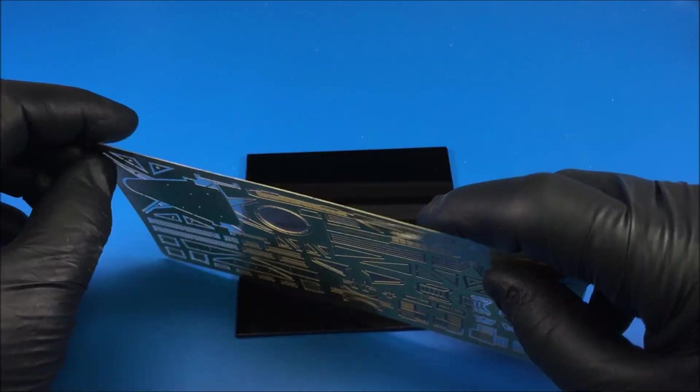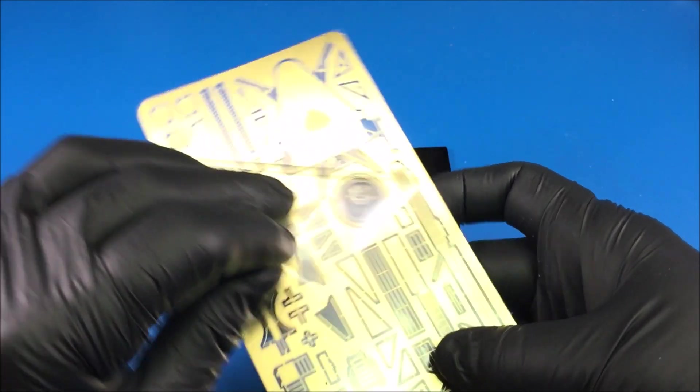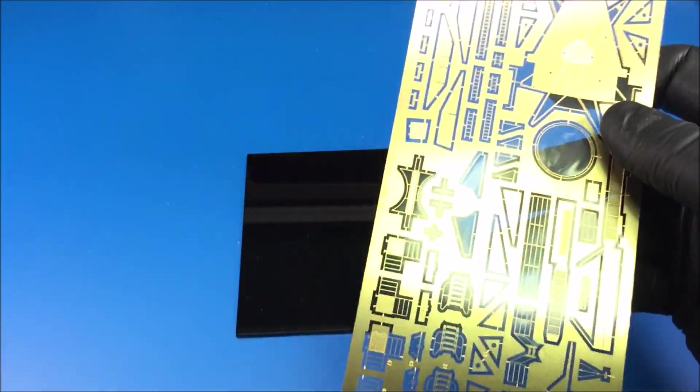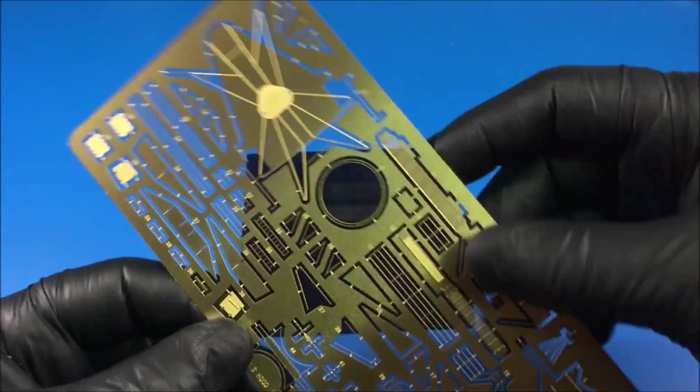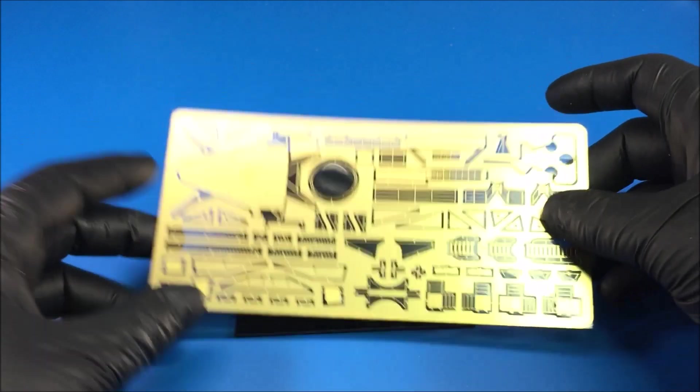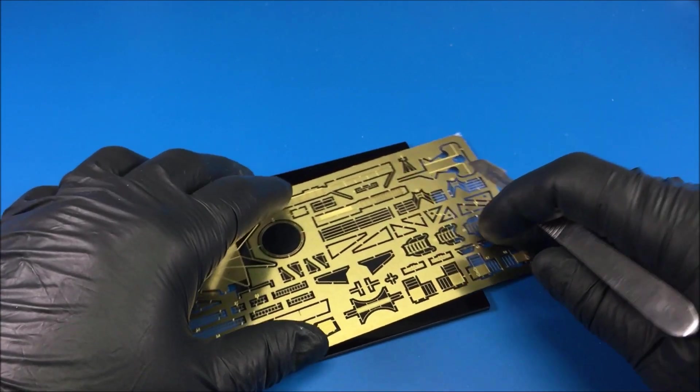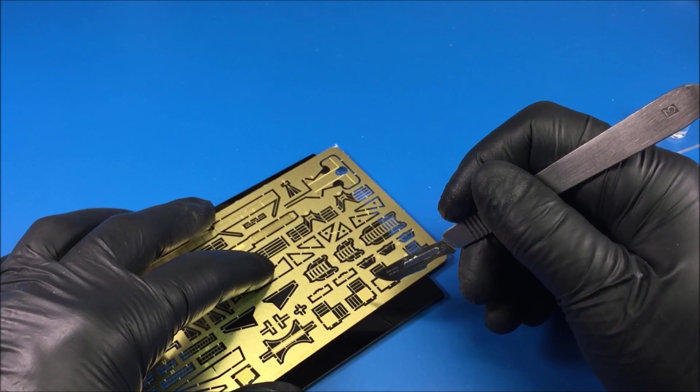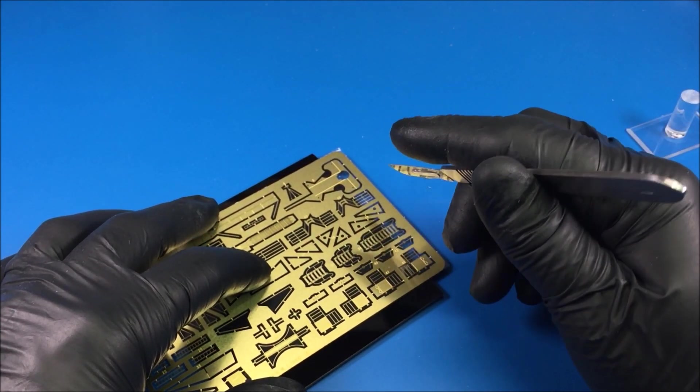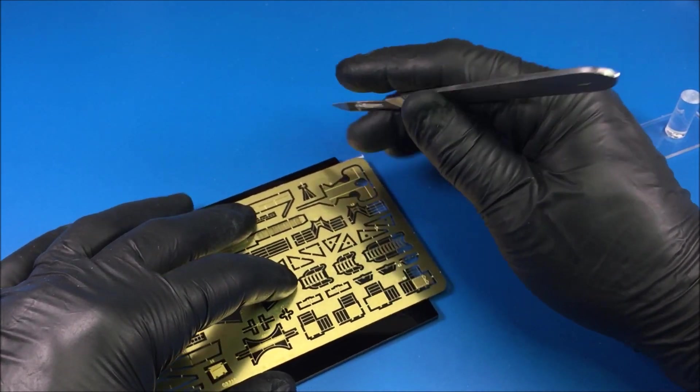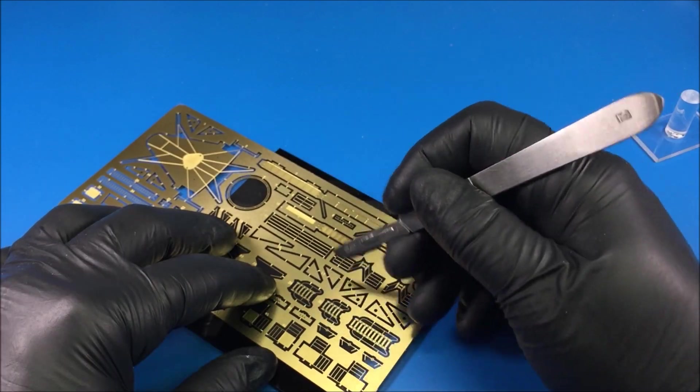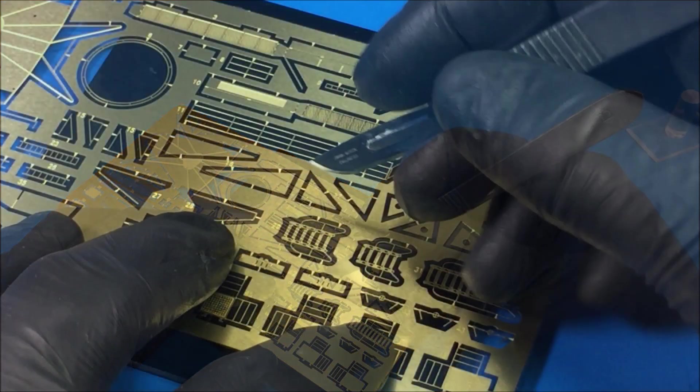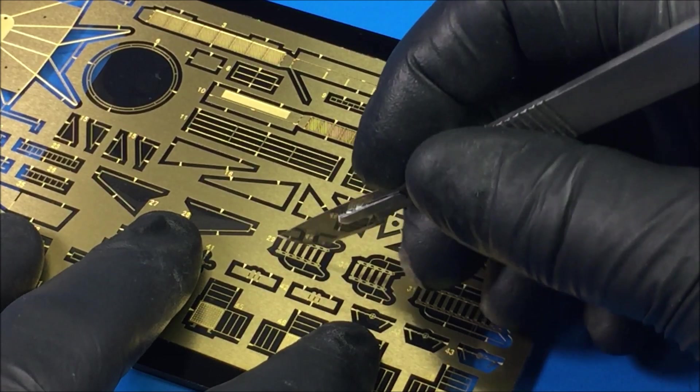I'm going to show you how to cut photo etch off a sheet here. Most photo etch these days comes with protective plastic on top as well as another one underneath, and the reason for that is when you're cutting your parts out they don't go flying.